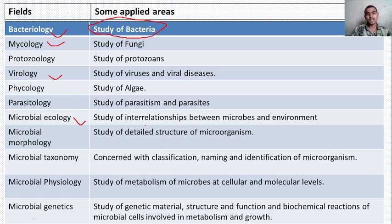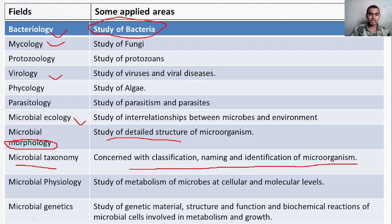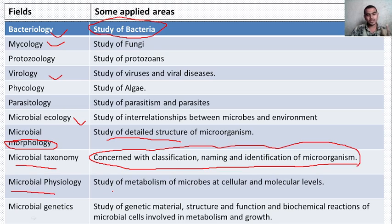Microbial ecology is the study of the interrelationship between microbes and the environment — for example, microbes that decompose wood and timber interact with the environment. Microbial morphology is the study of the detailed structure of microorganisms — morphology refers to the study of the outer structure of any living object. Microbial taxonomy is concerned with the classification, naming, and identification of microorganisms.